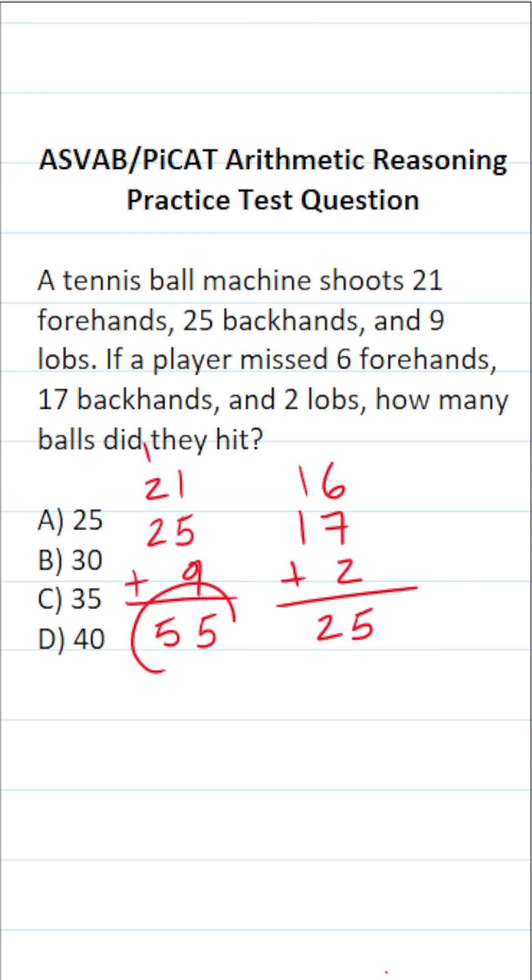So if the machine shot 55 balls at the tennis player, and they missed 25 of them, to find the number that they hit, we're going to do 55 minus 25. 5 minus 5 is 0. 5 minus 2 is 3. That means they must have hit 30 of them. So this one is B.